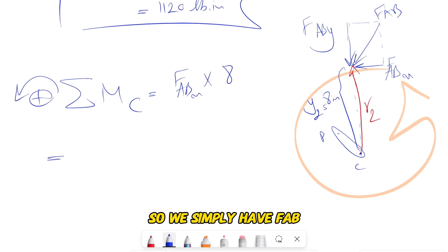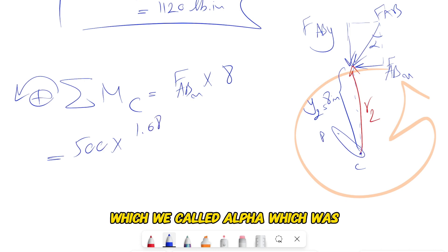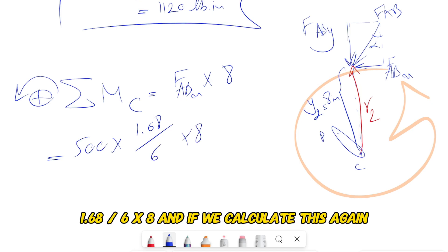So we simply have FAB - this component - times 8. And we found the FABx: we had simply 500 times the sine of this angle, which we called alpha, which was 1.68 divided by 6.